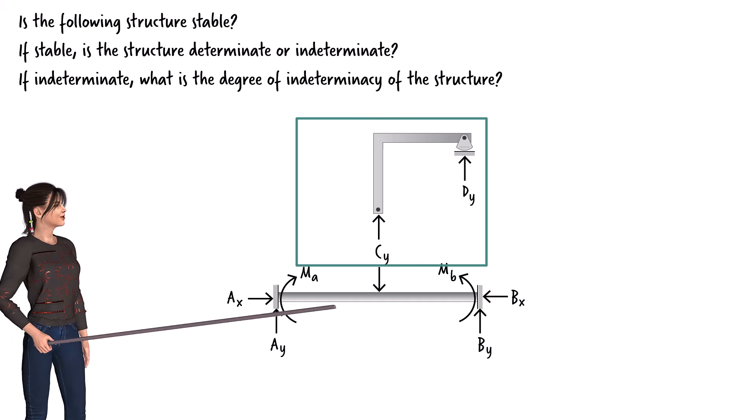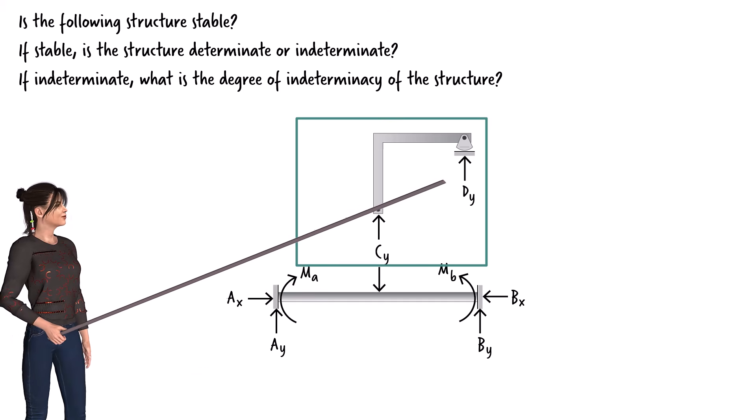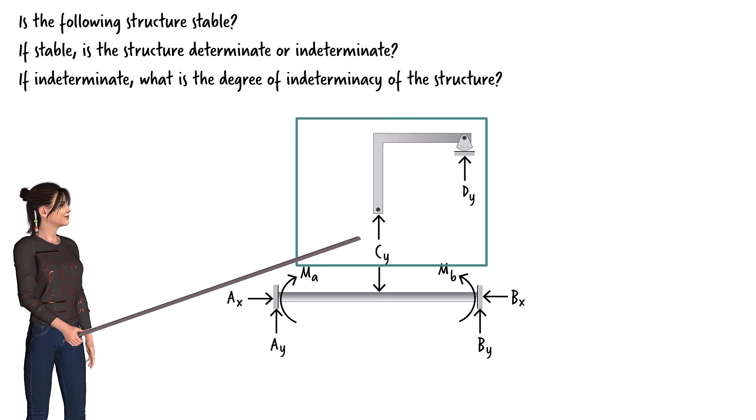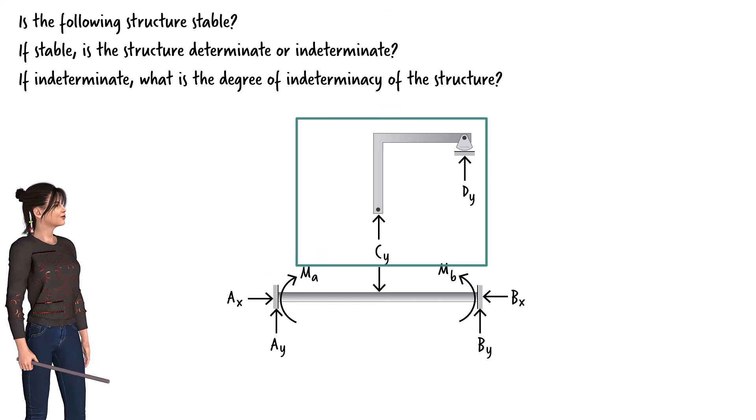For the frame, there is a vertical reaction at the rocker and a vertical reaction at the collar. Since the collar can slide along the length of the beam and is pin-connected to the frame, there would be no horizontal reaction force or bending moment at that point.